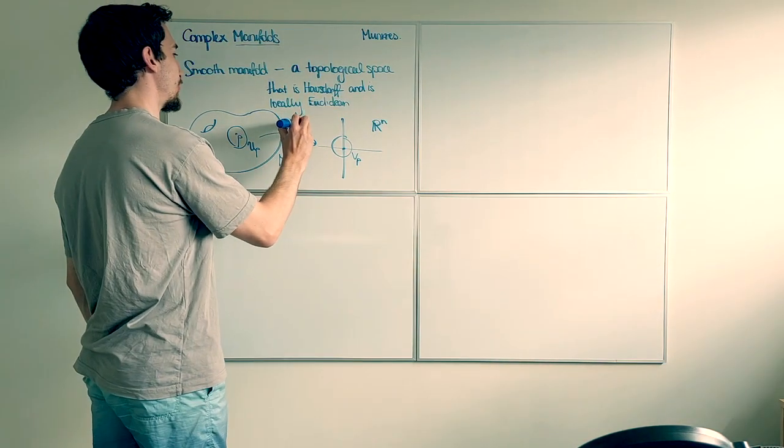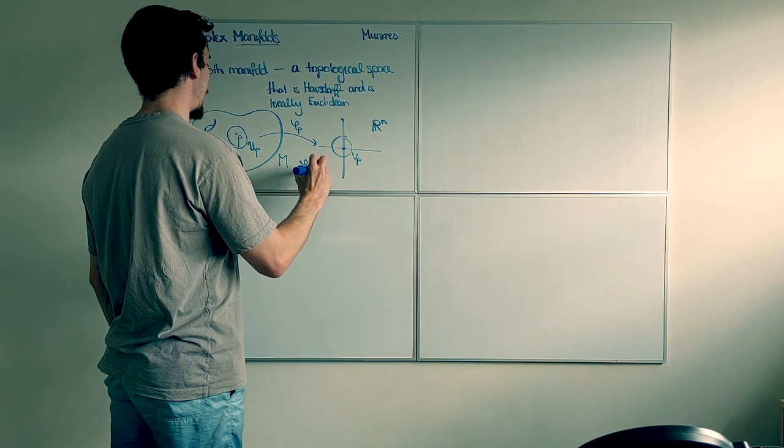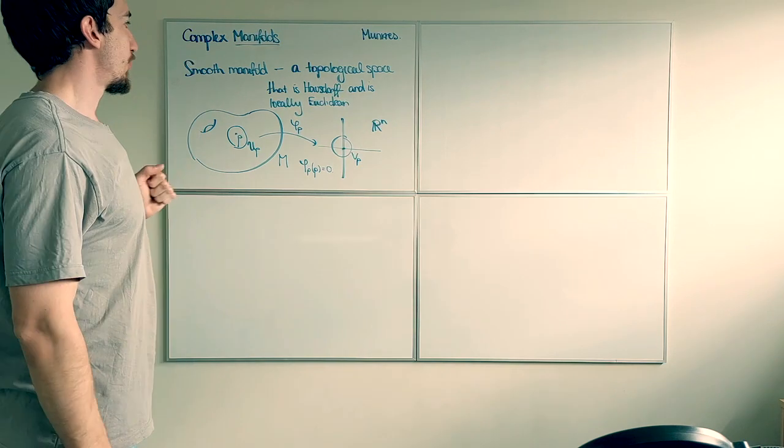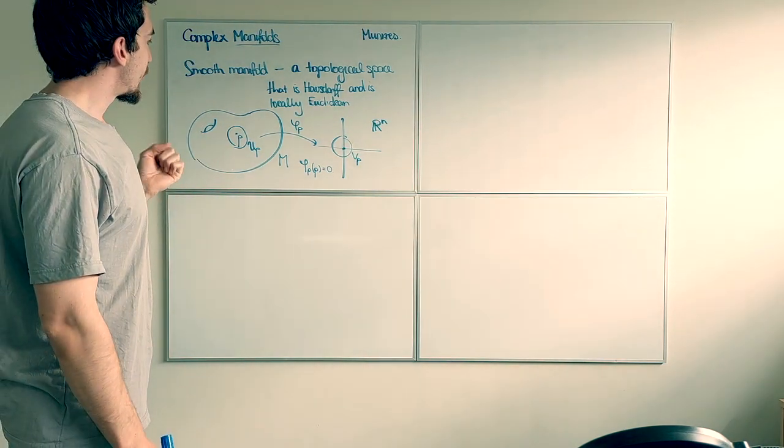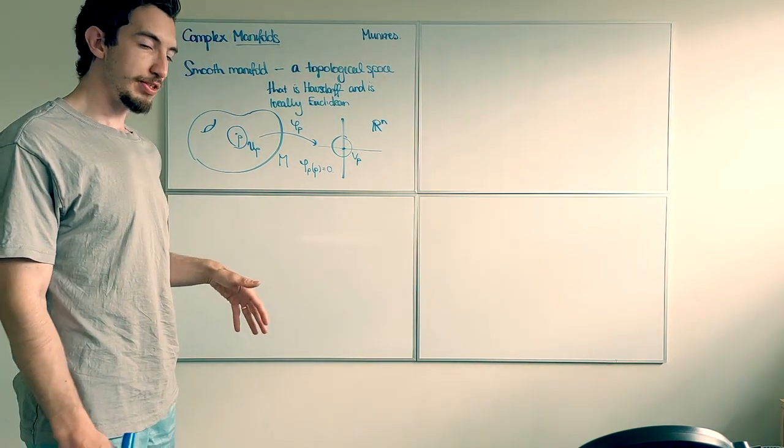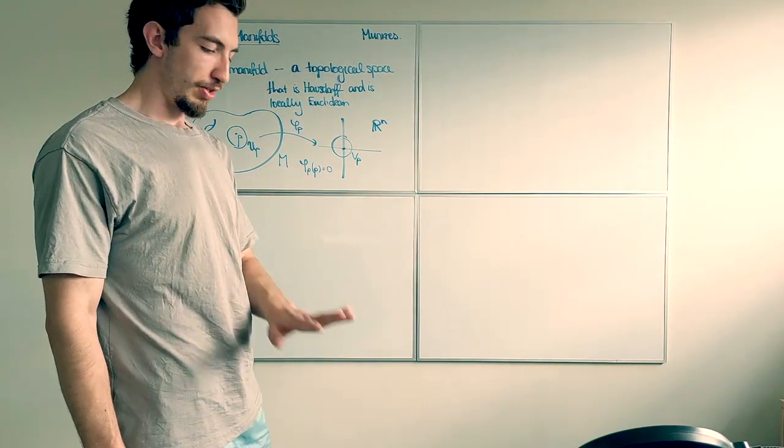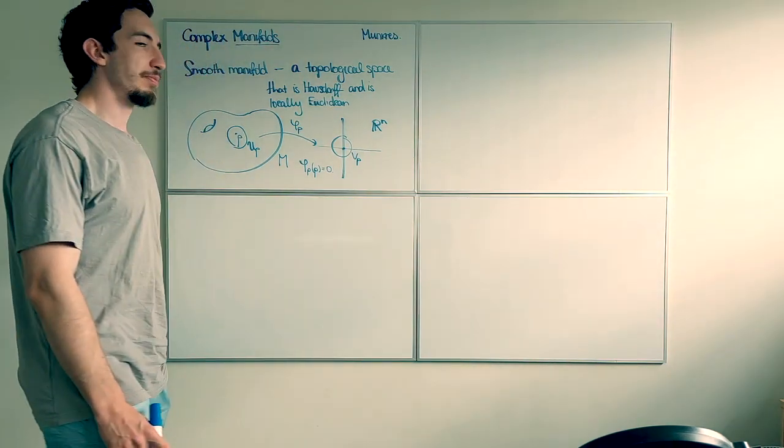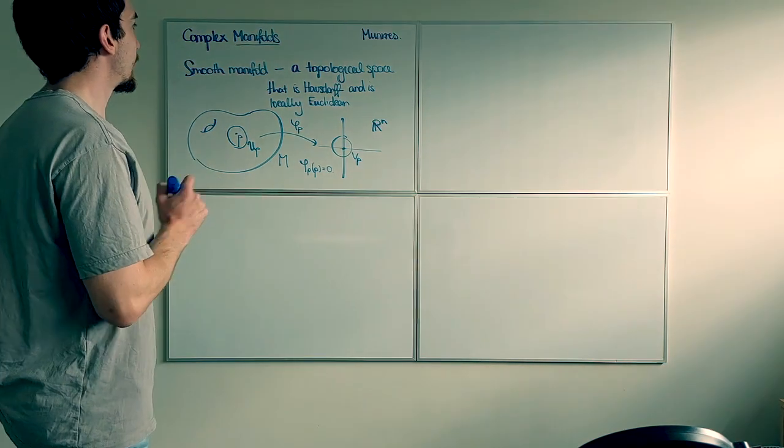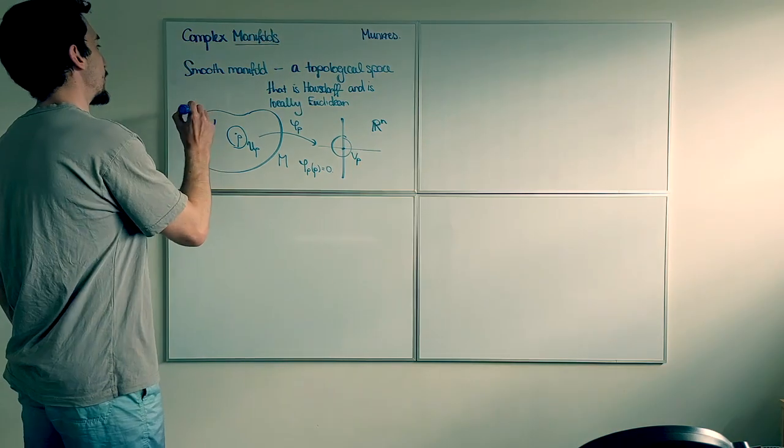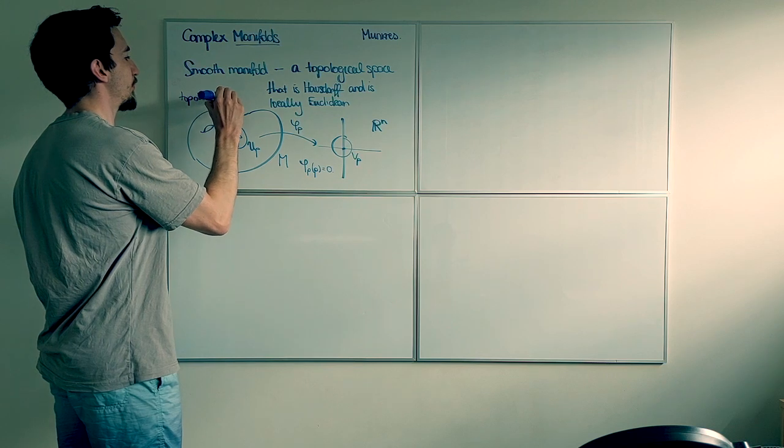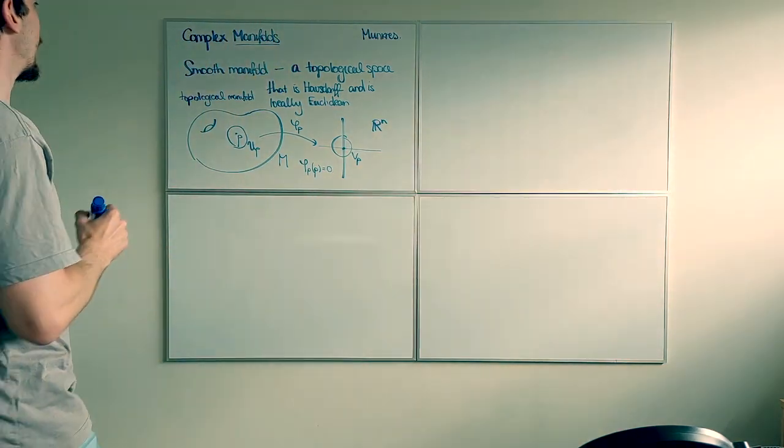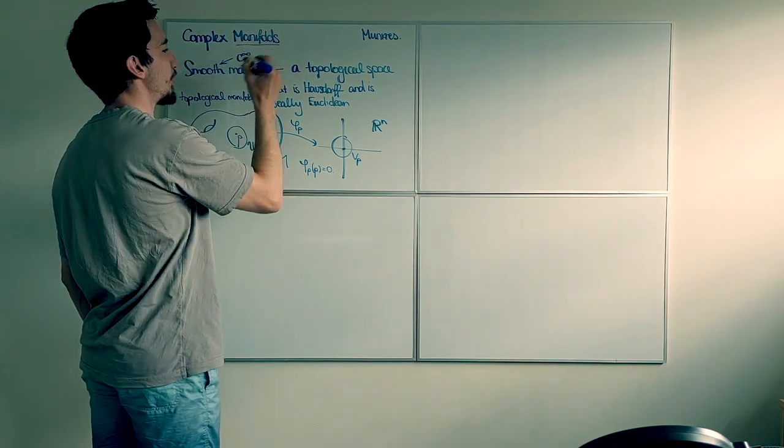And moreover, this homeomorphism sends the point P to the origin in RN. So, a smooth manifold is a Hausdorff topological space, together with the following property that if we look down at our feet, and we zoom in sufficiently far, then the space that we're looking at, or standing upon, should be flat. It should be identified, at least topologically, with RN. Now, I haven't given the complete definition yet, so far, all I've specified is probably what you would call a topological manifold.